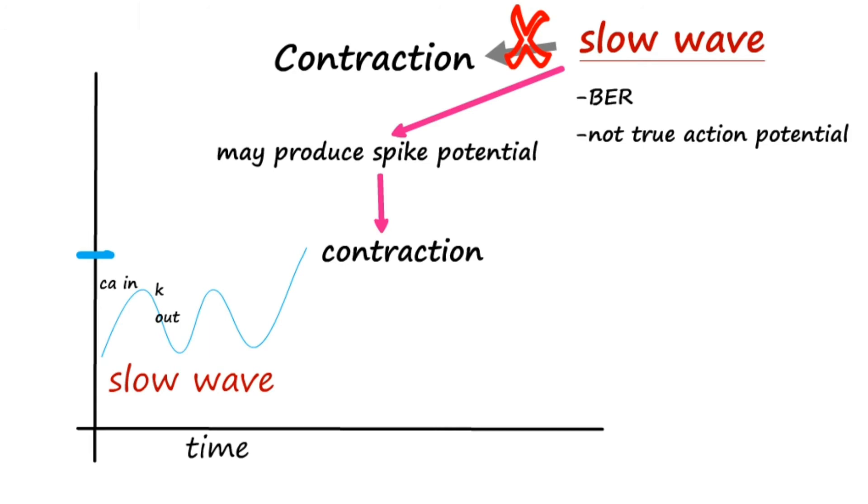Slow waves in stomach are about 3 per minute, 12 per minute in duodenum, and 8 to 9 per minute in ileum.